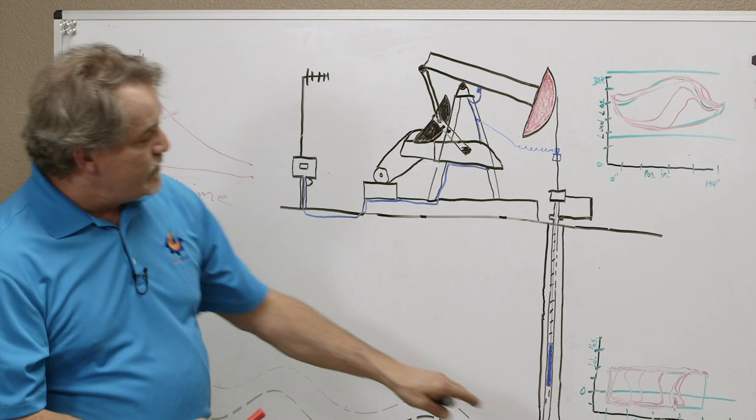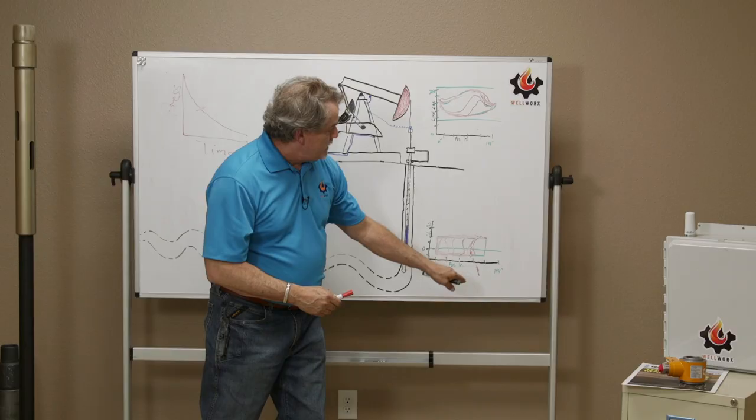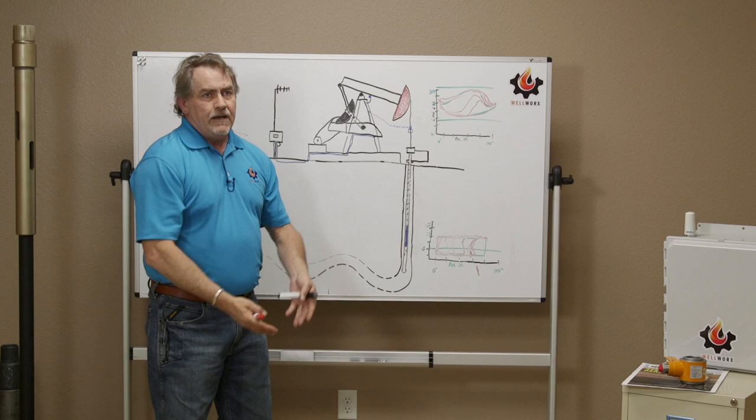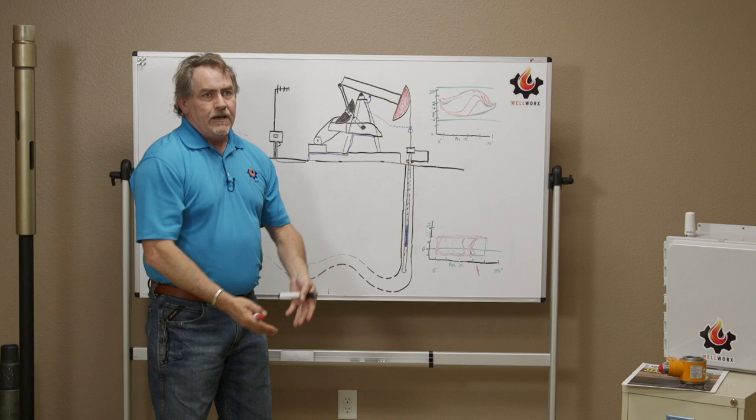Another option that you commonly see is a variable speed drive, where when I see this incomplete fillage, I can just slow down. And in that case, I'm not stopping and allowing the wellbore to replenish. I'm trying to more or less maintain a constant level in the wellbore all the time without over-displacing the pump. We're going to be in virtual balance.